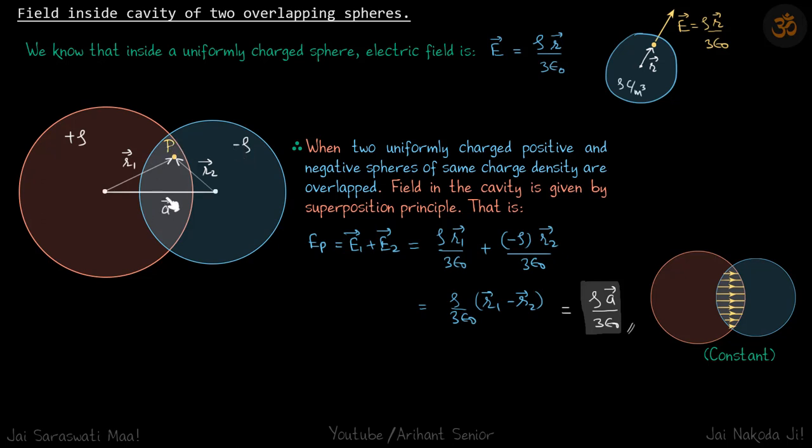Because they are overlapping, you can imagine that inside of this region there will be no charge, there will be zero charge, because the densities are equal and opposite. So we need to find the field inside this region.